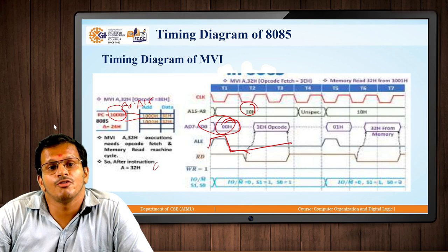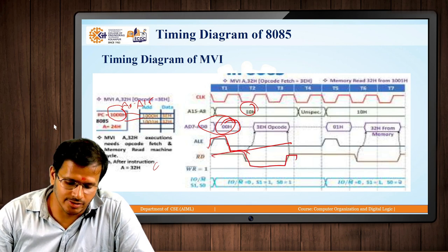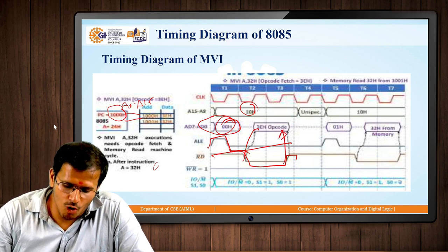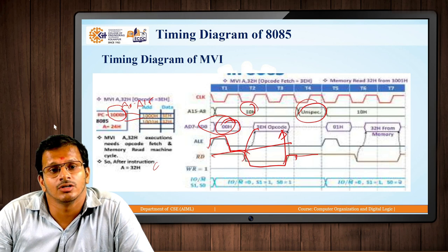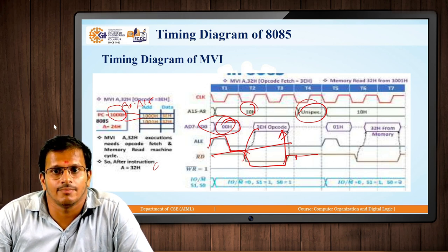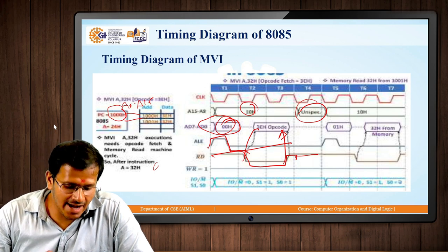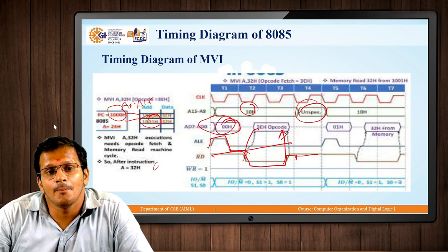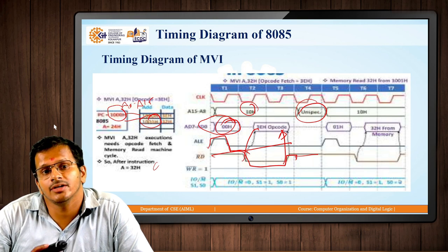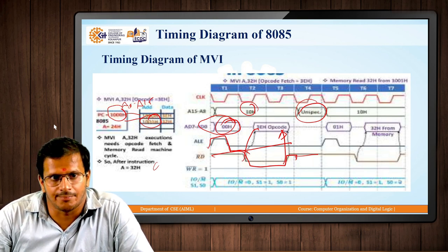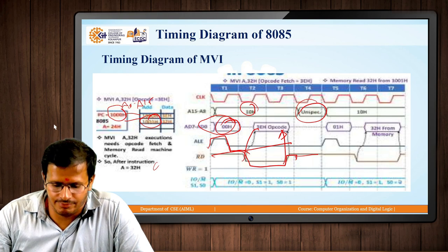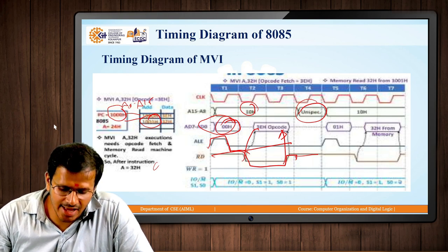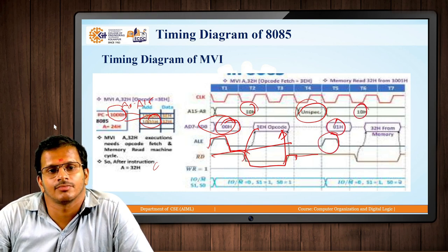The R̄D̄ operation is performed to read the opcode from memory into the microprocessor. Up to T4, the state is unspecified because the work of address and data is over. Next, we need the address 1001H — the program counter increments by 1 during the instruction decode process. 1001H is passed through address lines A0 to A15, and AD0 to A7 becomes A0 to A7 with ALE high.